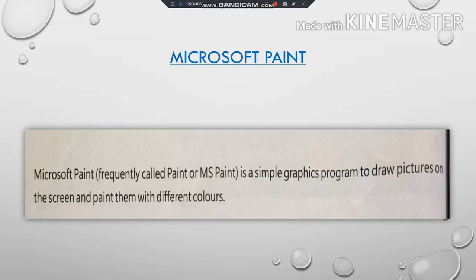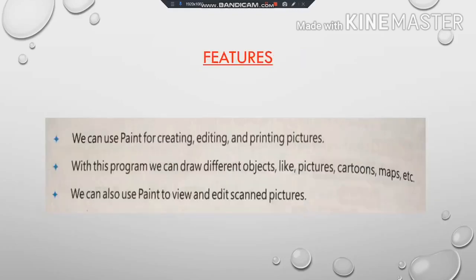Now, what are the features of Microsoft Paint? The features of Microsoft Paint are: we can use Paint for creating, editing, and printing pictures. By using Microsoft Paint we can edit an already made picture, and we can also print our pictures or drawings.